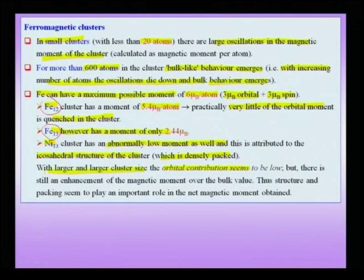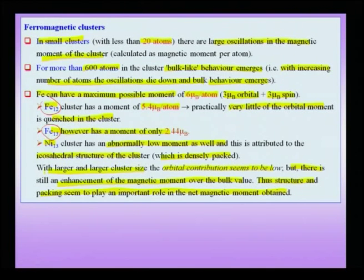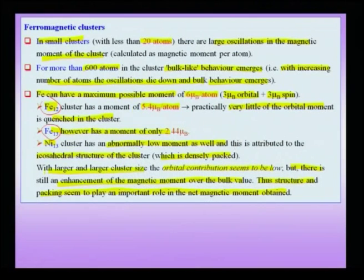With larger and larger cluster size, the orbital contribution seems to be low, but there is still an enhancement of the magnetic moment over the bulk value due to the reduction in size. The structure and packing fraction play an important role in the net magnetic moment of these clusters. To summarize: ferromagnetic clusters can be divided into the nano crystalline regime (small oscillations), the large cluster regime (oscillations spread over many atoms), and the small cluster regime (fewer than ~20 atoms, sharp variations). Clusters with icosahedral close-packed configuration give a low magnetic moment.